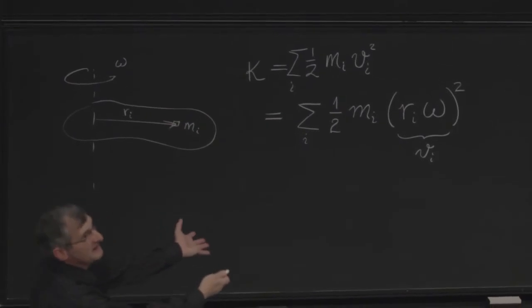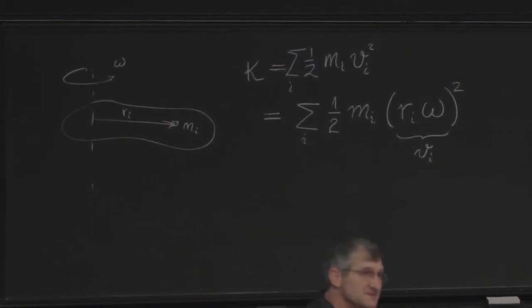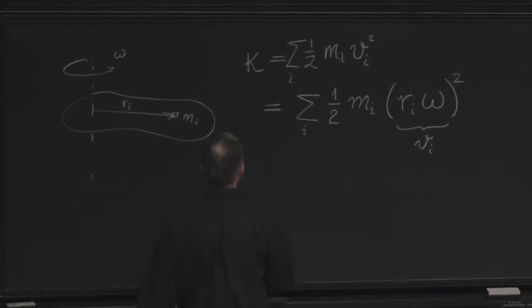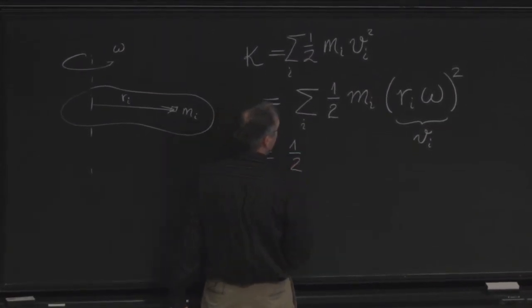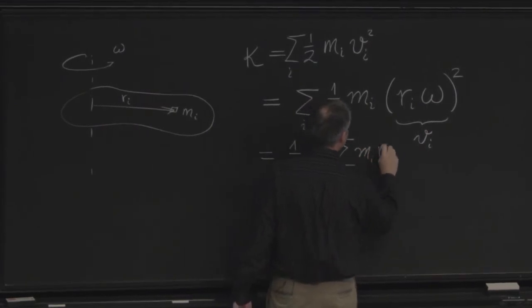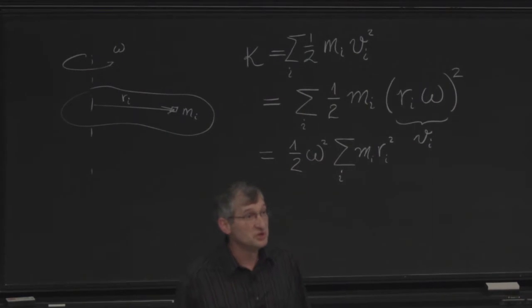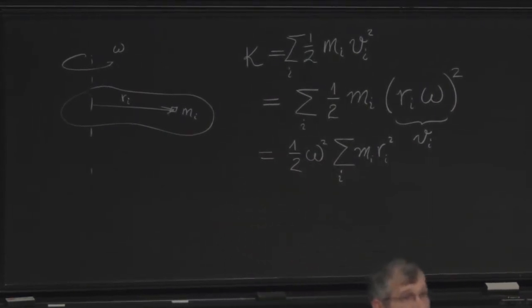So now let's factor out the stuff that doesn't change while we do the sum. Just put that at the front. 1 half comes out. Omega squared comes out. And then I'm left with the sum over i of m sub i r sub i squared, which should give you a feeling of déjà vu.